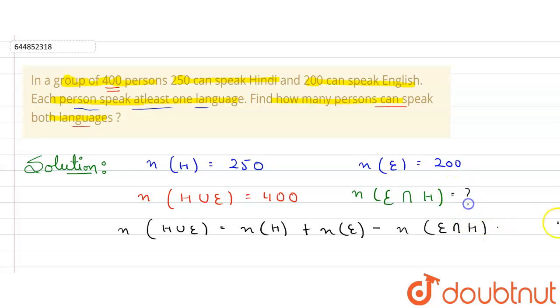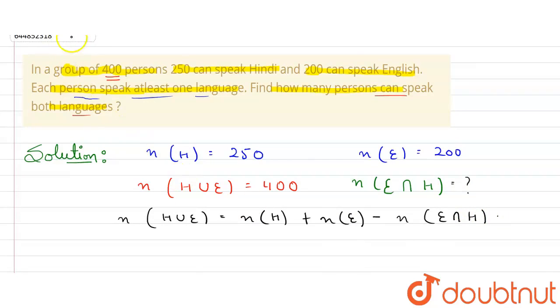So let's put the values back in this formula. Union value is 400 here. This value is 250 given in the equation, and here this value is 200, and minus we need to find this intersection value, people who can speak both languages.